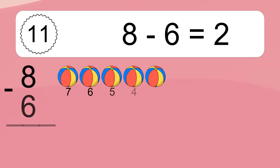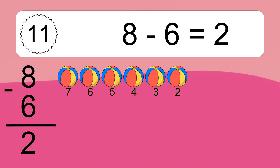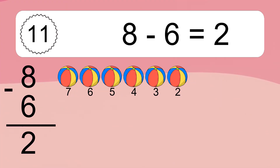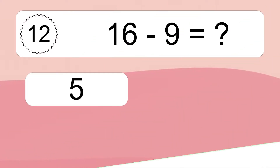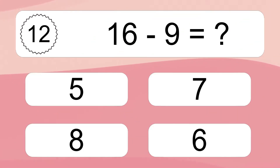8 minus 6 equals what? 8 minus 6 equals 2. Let's count it: 7, 6, 5, 4, 3, 2.